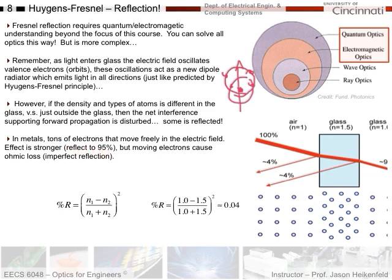Metals reflect up to 95% of light. Furthermore, in a metal the electrons are free — not bound to atoms — so as they move back and forth they generate a current. Moving electrons through a conductor with resistance causes ohmic heating, which is why metals actually absorb some light as well. With Fresnel reflection at a glass surface, by contrast, there's no absorption whatsoever because the interaction is completely elastic — you're perturbing the electron orbit like a spring, not driving current through a resistive conductor. So the Huygens-Fresnel principle also predicts Fresnel and metallic reflection.